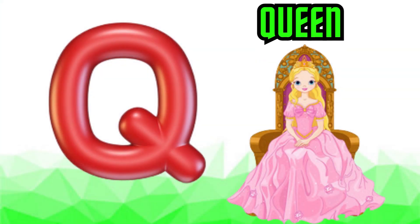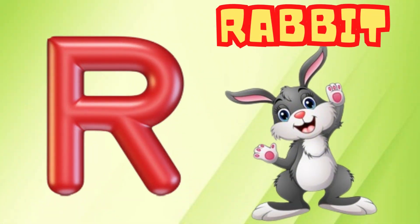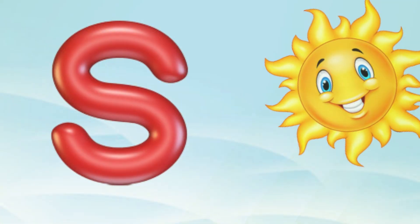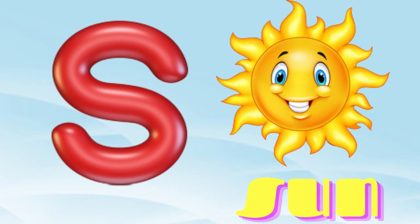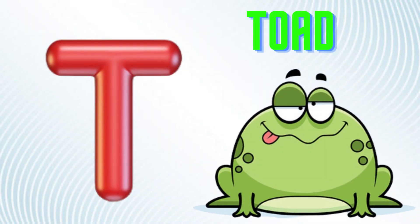Q is for Queen, Q-Q-Queen. R is for Rabbit, R-R-Rabbit. S is for Sun, S-S-Sun. T is for Toad, T-T-Toad.